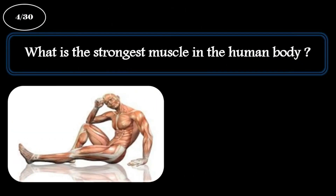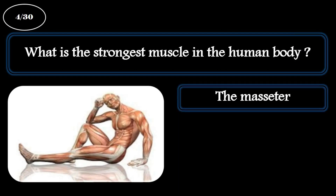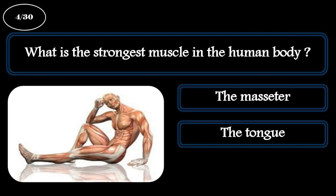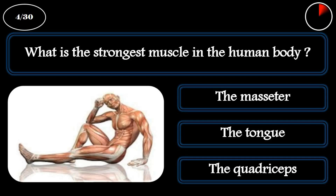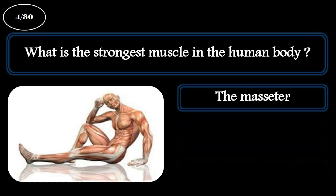Question 4. What is the strongest muscle in the human body? A: The masseter. B: The tongue. C: The quadriceps. The correct answer is the masseter.